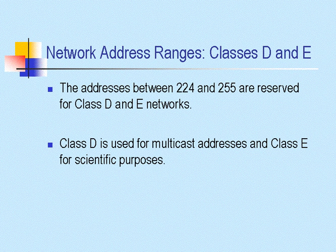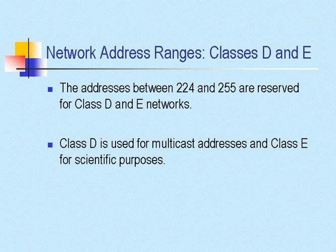We also have a couple of special ranges — Class D and Class E. The addresses between 224 and 255 are reserved for these two particular classes. Class D is used for multicast addressing, and Class E is reserved for scientific purposes.